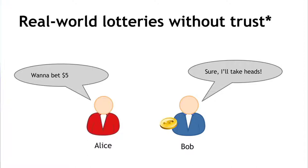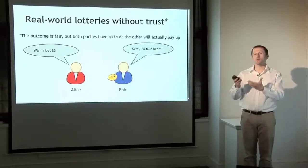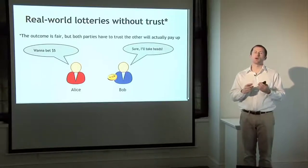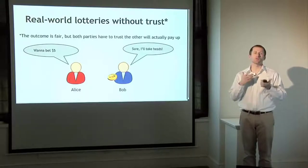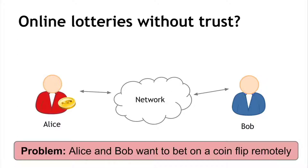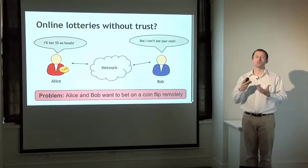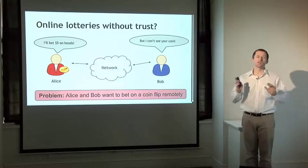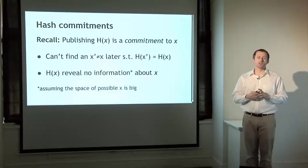Of course they have to trust that whoever loses is actually going to pay — maybe this isn't legally enforceable, it's just an agreement of honor. In the online world we'd like to solve both problems: generating randomness both parties agree is fair, and forcing the party who loses to actually pay. If a network is between Alice and Bob, they can't see the same physical coin. Alice might say she'll flip the coin, but Bob might not trust her — maybe she's showing a pre-recorded video. A solution is to use hash commitments.